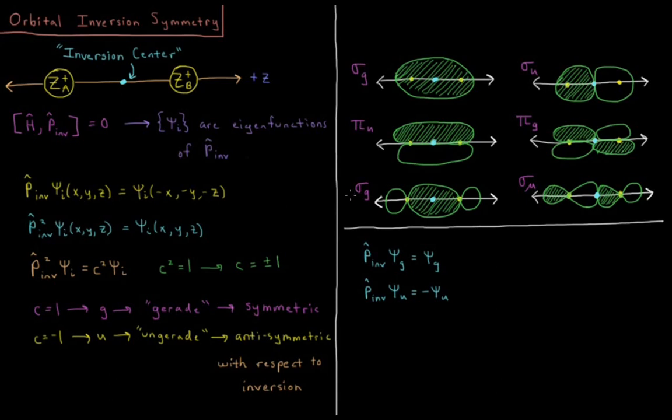And I can have other cases where I have sigmas that look more complicated, but positive to positive, positive to positive, negative to negative, everywhere I go, it stays the same. So that's gerata.